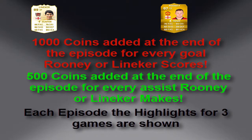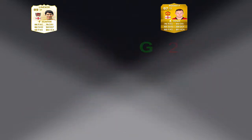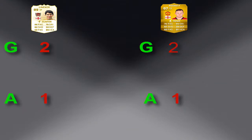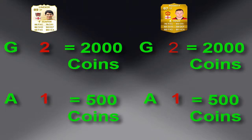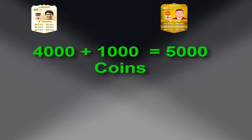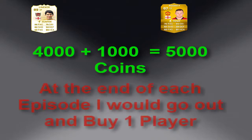In each episode I show three games and show the highlights. Whenever Rooney or Lineker scores or assists it gets updated in the annotations at the top. After the three games highlights I'll do an outro explaining how many goals and assists each of them got that episode. Say Rooney got 2 goals and Lineker got 2 goals and they both got 1 assist — that's 4,000 coins for goals plus 1,000 for assists, so 5,000 coins added to the budget, which is currently 9,282.